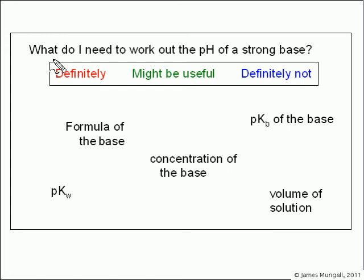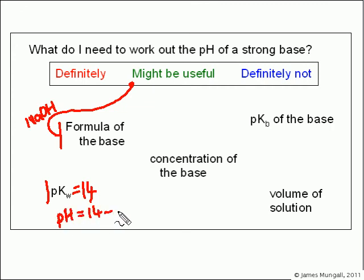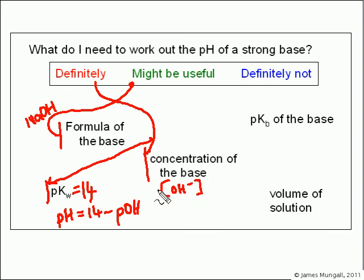Let's just conclude by answering this question. What do I need to work out the pH of a strong base? So that definitely might be useful or definitely not. So first on then we've got formula of the base. Well I would say the formula of the base might be useful so that you can just identify that it is a strong base. You want to be looking for a group 1 hydroxide here, something like NaOH or KOH. Okay, pKw, do you need pKw? Yes you do. You need to know that that is equal to 14 because then you can say pH equals 14 minus the pOH. Concentration of the base. Yes, we definitely need that. So both of these are definitely so far. Because we're going to say that the OH- concentration is equal to the concentration of the base.